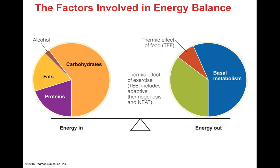Here are the factors involved in energy balance. All the energy in includes everything you eat: fats, proteins, carbohydrates, and alcohol. Energy out is comprised of your basal metabolism, the thermic effect of food, and the thermic effect of exercise, which includes both adaptive thermogenesis and NEAT.